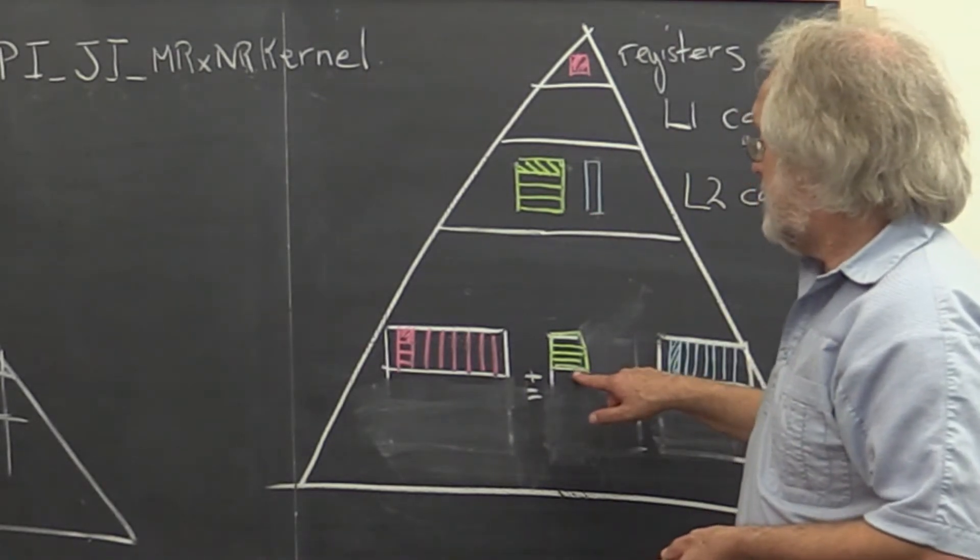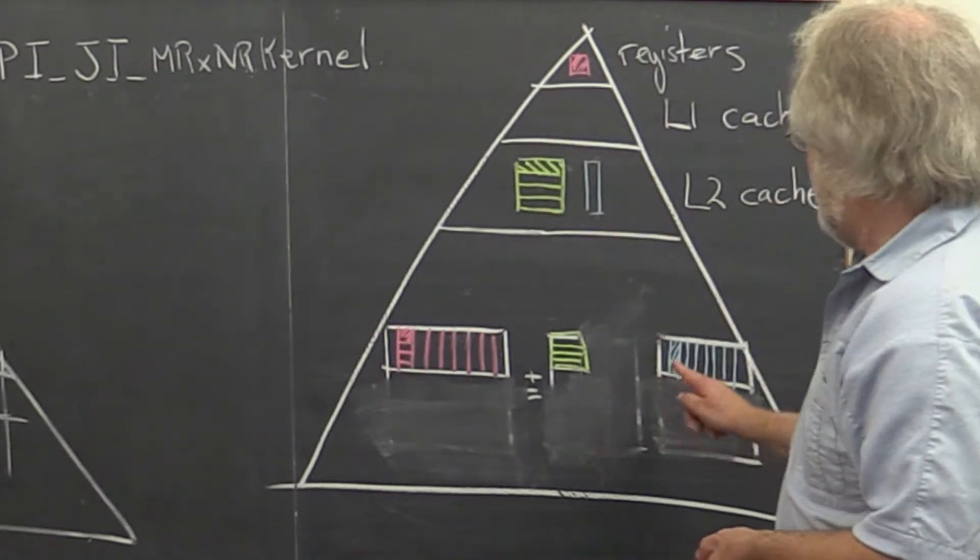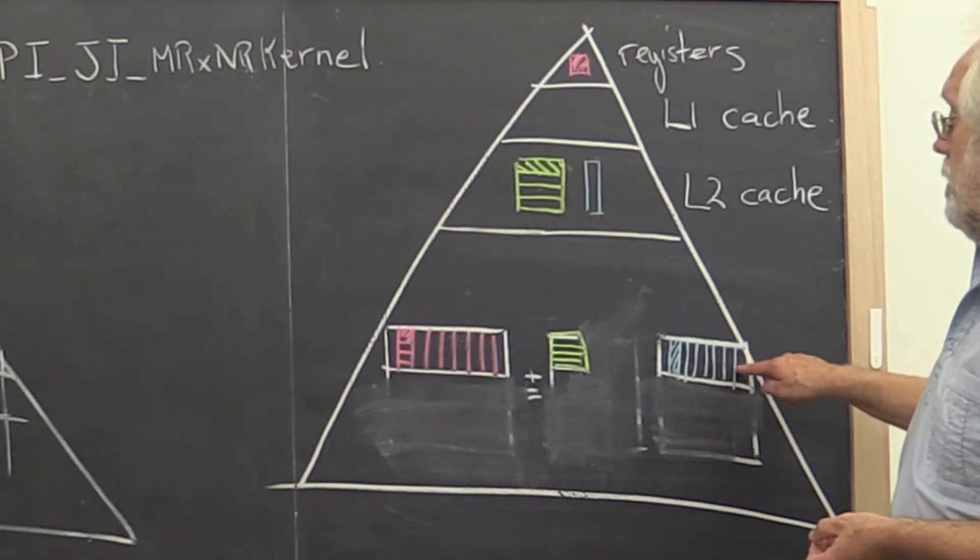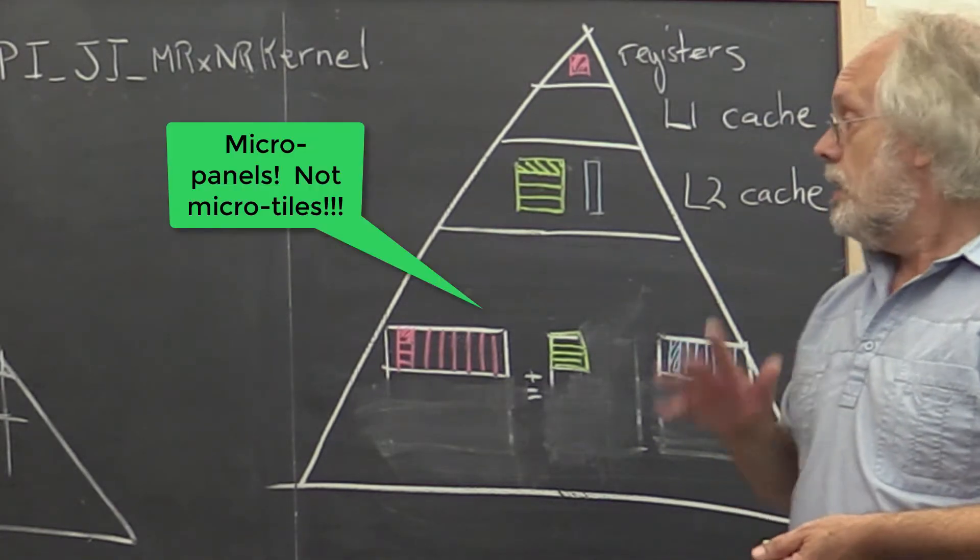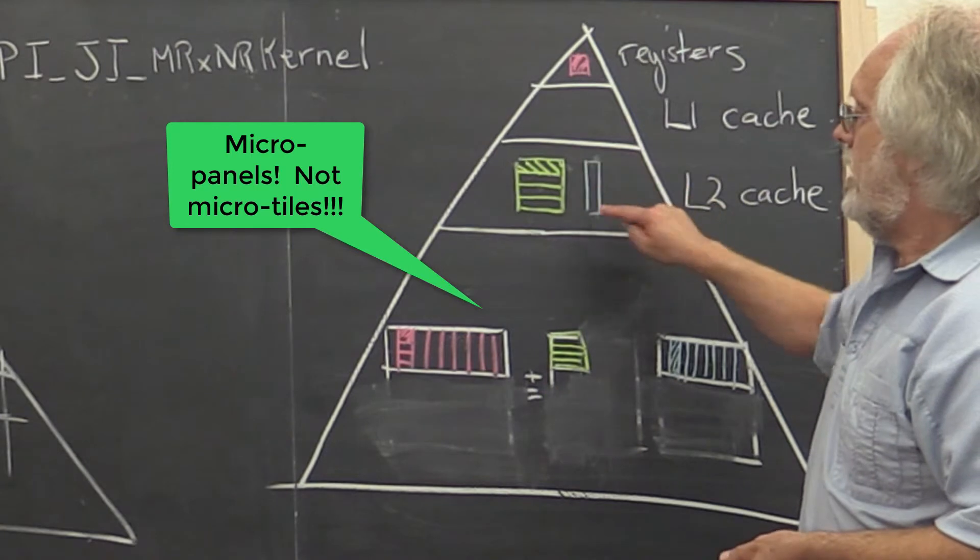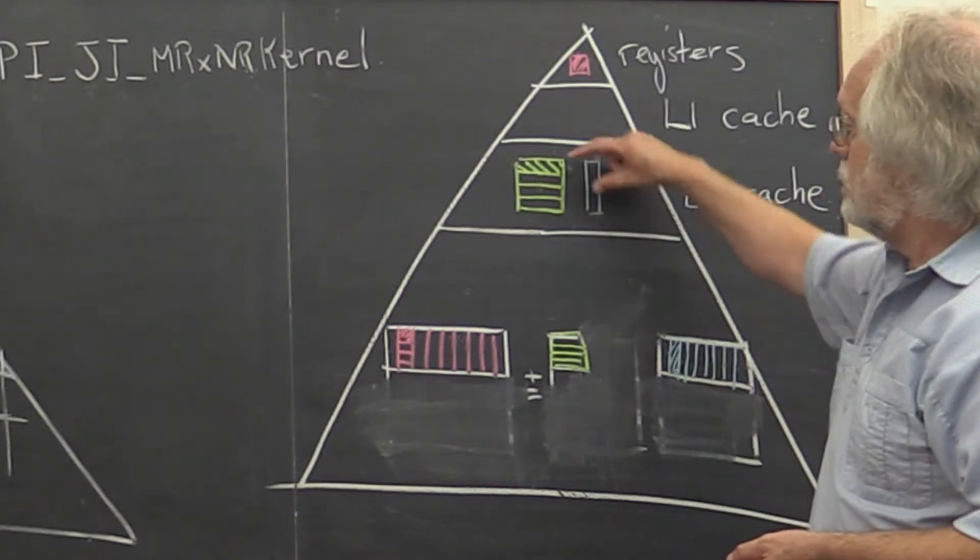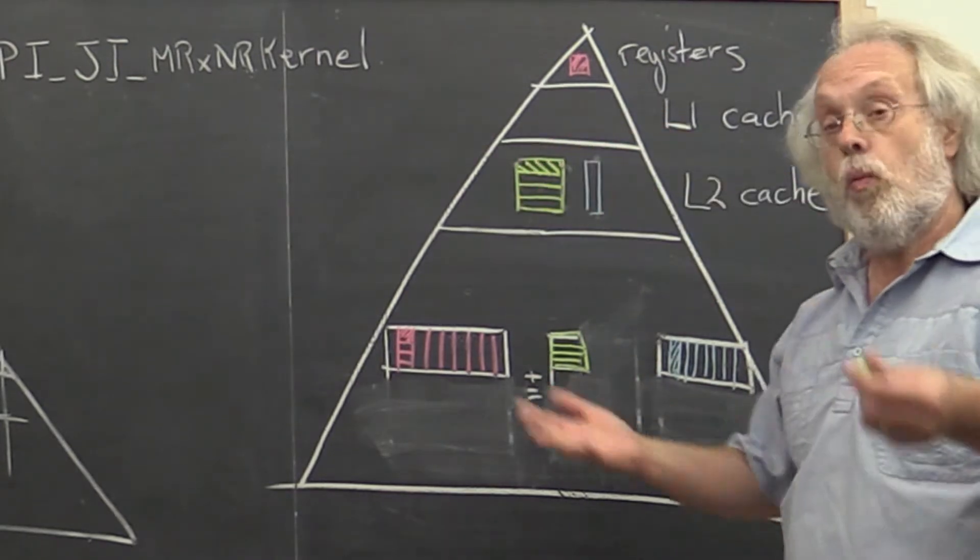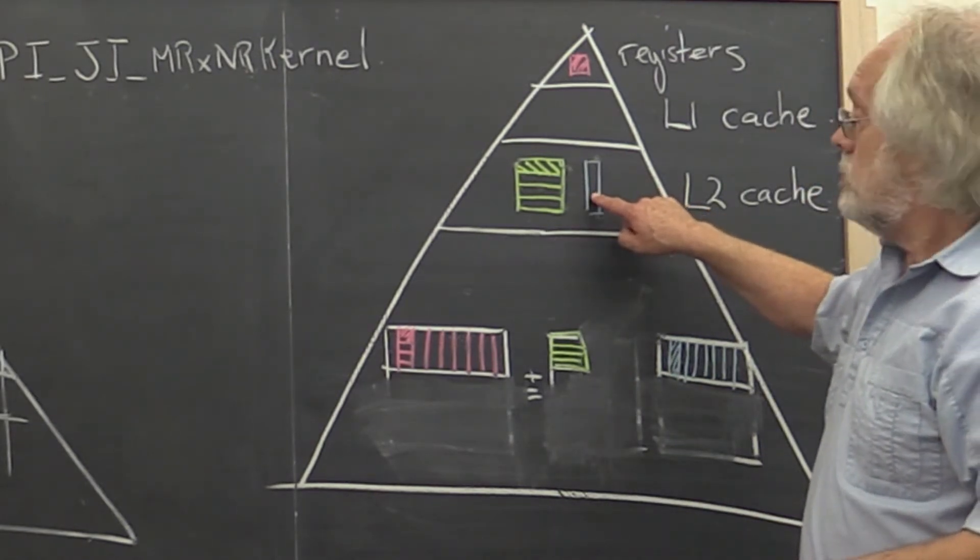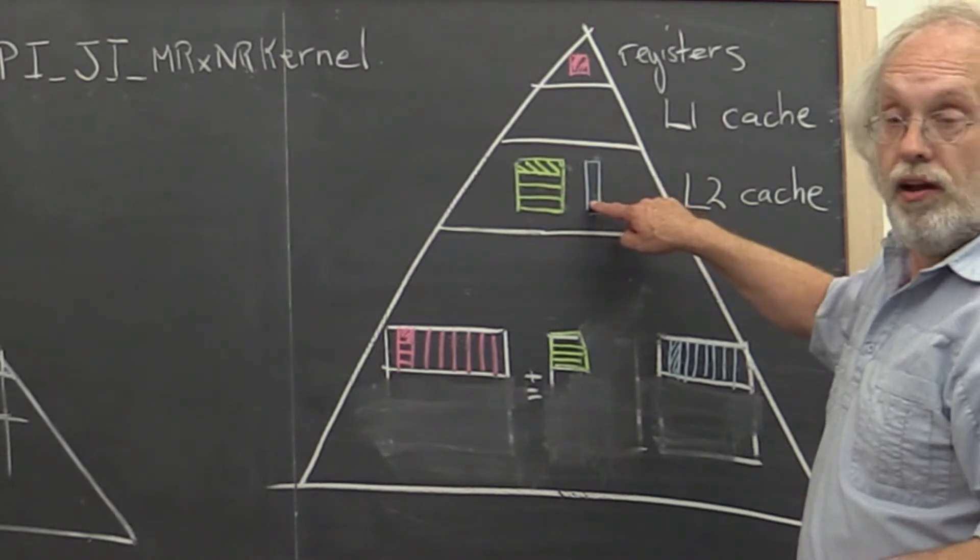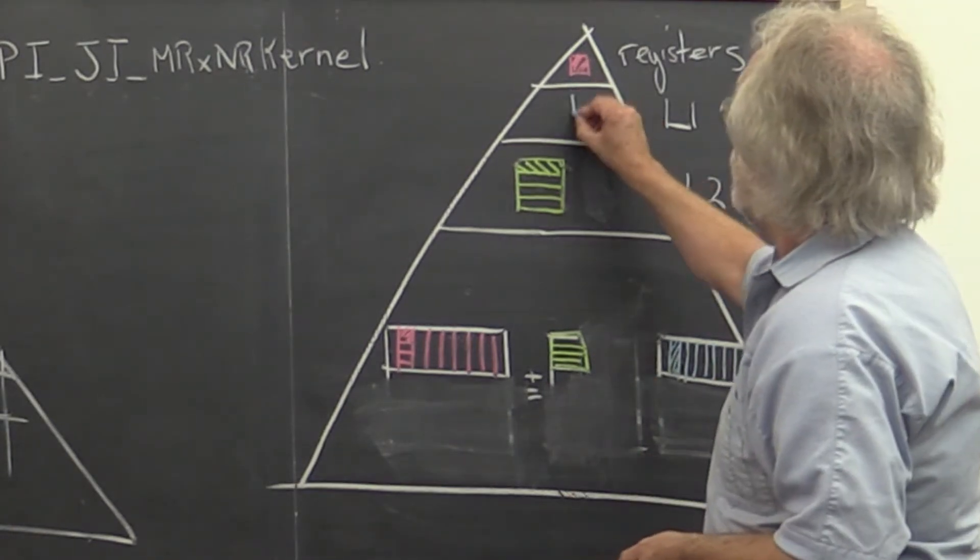It's why we placed our block of A here, because that block of A is being reused for many microtiles of B updating the corresponding microtiles of C. The question now becomes, where should we really place this microtile of B that we're now using? And notice that it gets reused many times. So it should be somewhere in some cache. But notice that it is relatively small. So maybe instead of placing it in the L2 cache, what we should do is place it in the L1 cache.